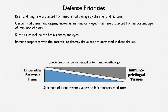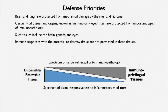So there is a spectrum of tissue vulnerability to immunopathology. The dispensable and renewable tissues are actually susceptible to immunopathology. The immune system is deployed differently in different tissues in the body, and the reason for that has to do with the costs of immunopathology.